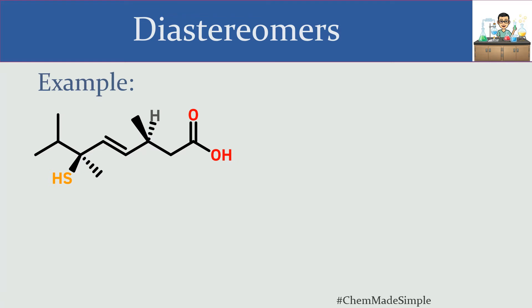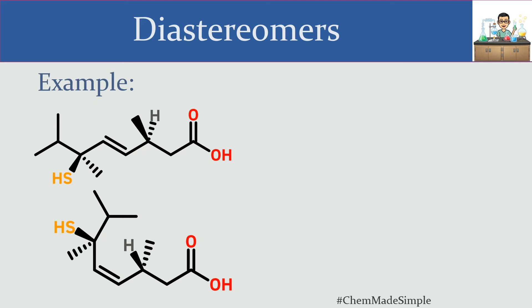If I contrast this molecule with the one right below, I see that the orientation around the pi bond has changed. The thiol group is still in the same place — still on a wedge — and the methyl group is still on a dash, which is the same as up top. But over here I notice that those groups have been flipped: now the methyl is on a dash, whereas previously the methyl was on a wedge. So these molecules are certainly not mirror images of each other.